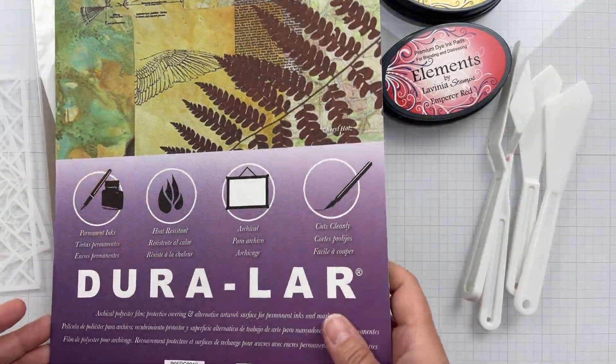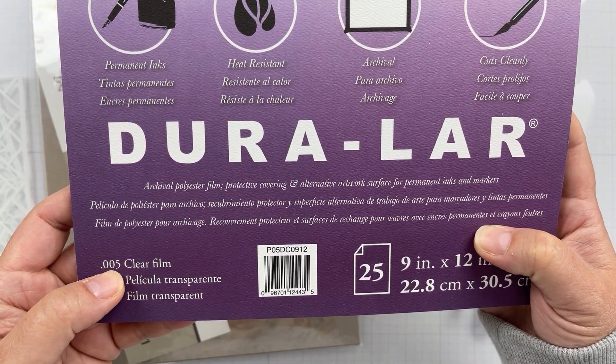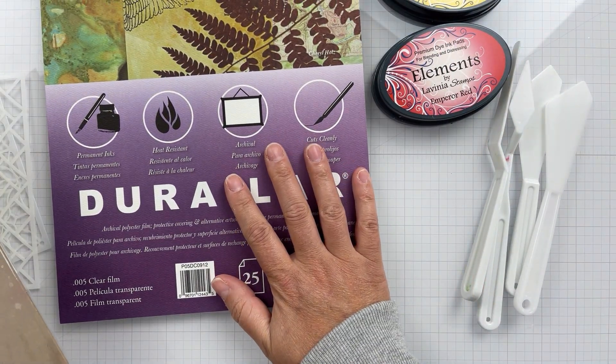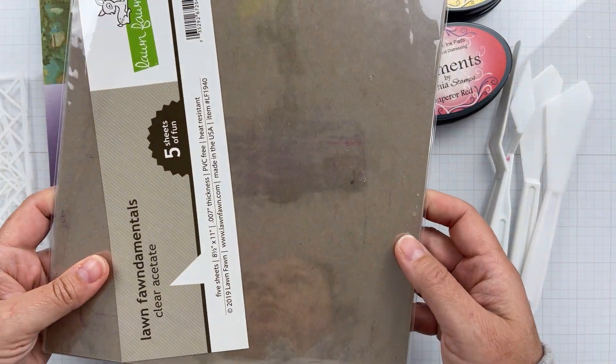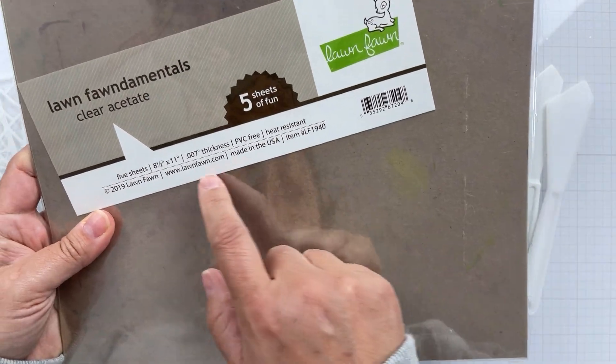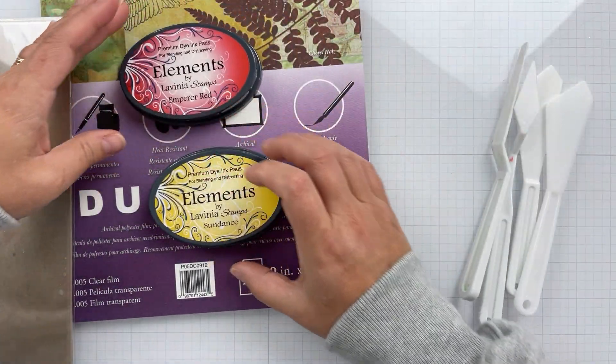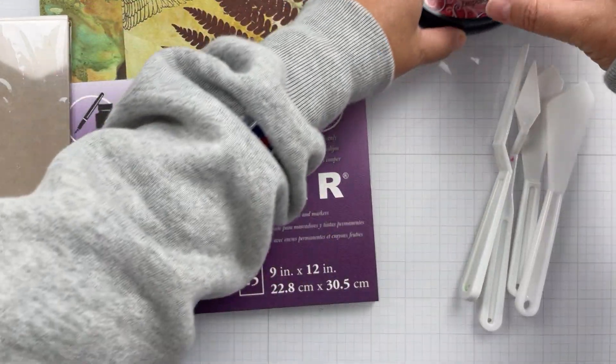I'm going to use the Duralar, and that's 0.005 thickness. Now the Lawn Fawn is a little bit thicker, 0.007. If you need to use it within a card base, use the Lawn Fawn. If you're going to use it like a window like I'm using, use the Duralar. The Lawn Fawn is going to give more stability - it's a thicker acetate.